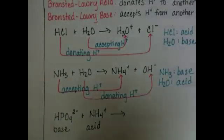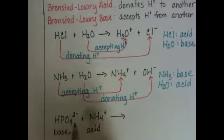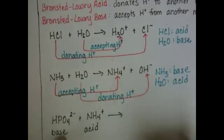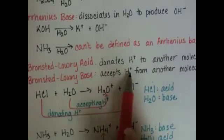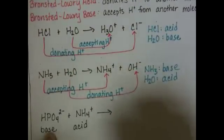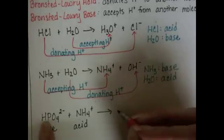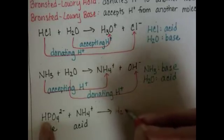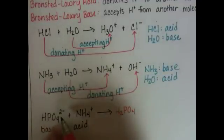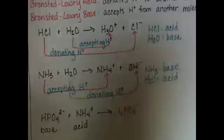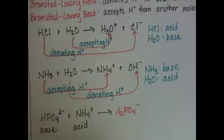HPO4^2-, if I'm telling you it's the base, that means it's going to be accepting an H+. We're going to be adding an H+ to it. So we're going to go from HPO4 to H2PO4, adding an H. And we're also going to add a plus charge. So we're going to go from two minus to just a minus, the dihydrogen phosphate.